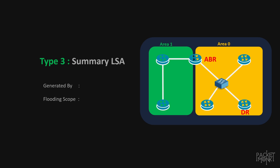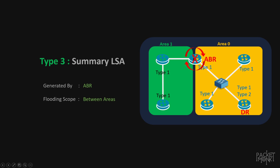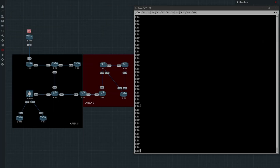Next one is summary LSA or type 3 LSA. This is generated by the ABR and it is exchanged between areas. As I mentioned, type 1 and type 2 LSAs stay within an area. In this example, all type 1 LSAs generated in area 1 stay inside area 1, which means area 0 will not be able to understand what is happening inside area 1. To fix that, the area border router will generate type 3 LSAs for each network in the other area, containing summarized information from all type 1 and type 2 LSAs within that area. The reason we do this rather than forwarding type 1 and type 2 LSAs directly is to improve scalability — ABR calculates the best path and shares that information to other areas as type 3 LSAs. Each type 3 LSA can be considered as a best route from that area.